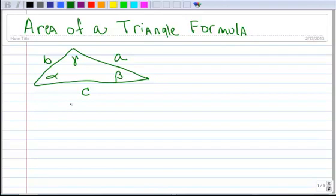All right, here's a new area of a triangle formula, or a formula for area of a triangle, and you're going to find this one really useful. So here is a non-right triangle, and I have it labeled according to our convention, and then I'm going to draw an altitude in here.